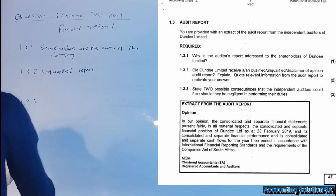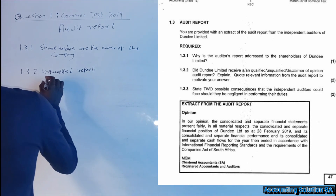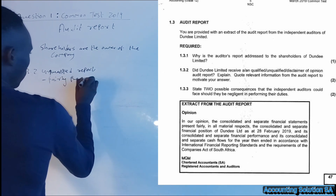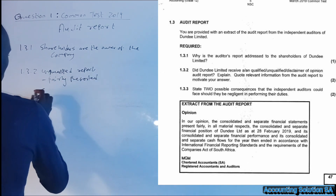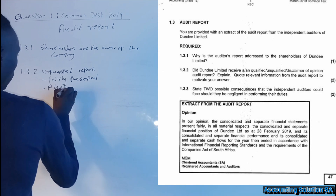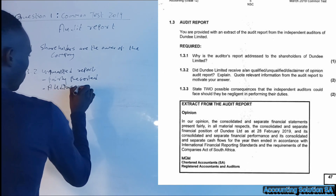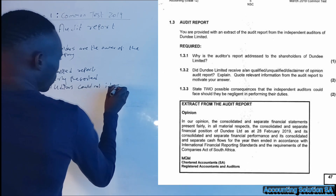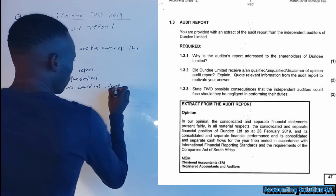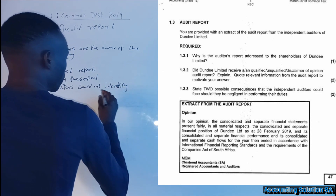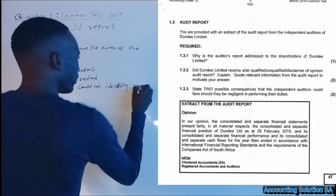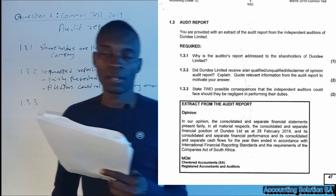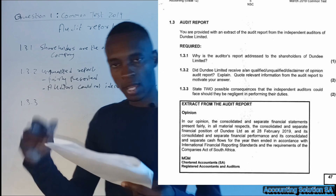Checking our scenario, the report in this case is unqualified. Reason number one: as you can see in the paragraph, they say the financial statements are fairly presented. Reason number two: the auditors could not identify any errors. That is the answer for 1.3.2 — that is how you identify whether it is qualified, unqualified, or a disclaimer opinion.